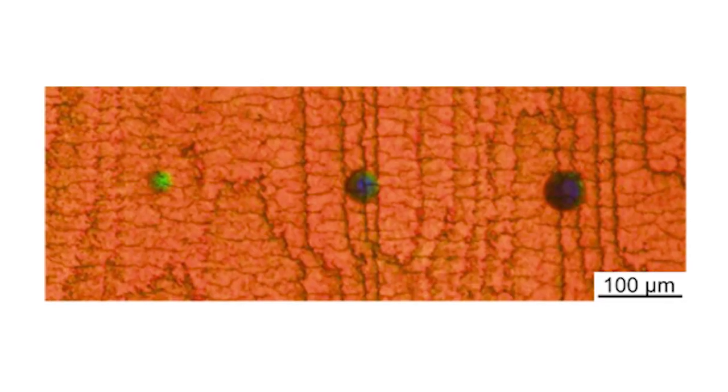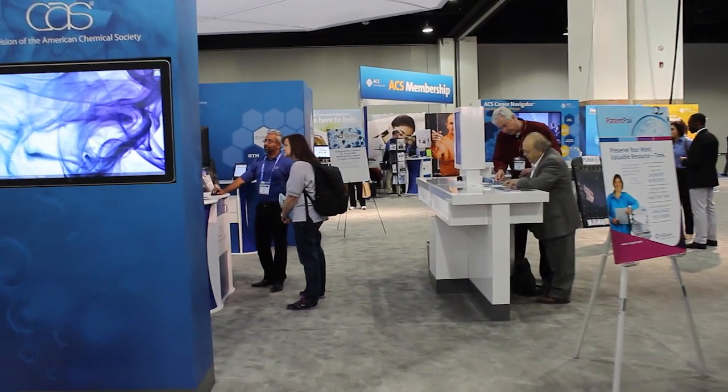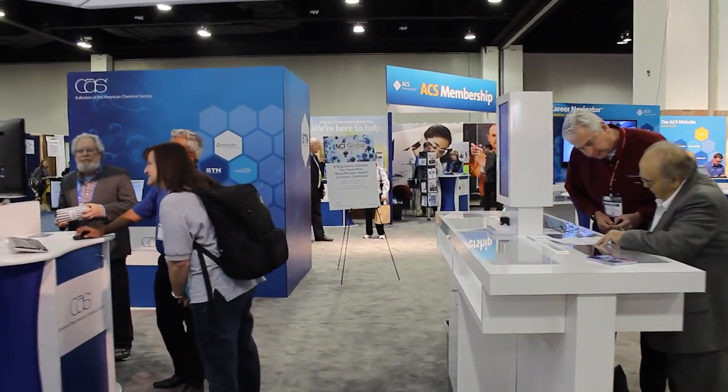Professor Xu Yang and her team at the University of Pennsylvania have developed a polymer-based material that changes color on impact. They're presenting their research at the 250th meeting of the American Chemical Society in Boston.